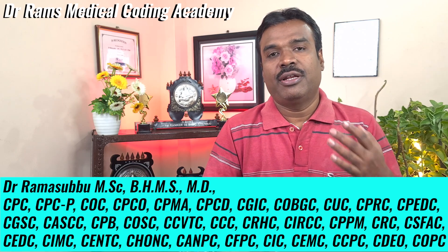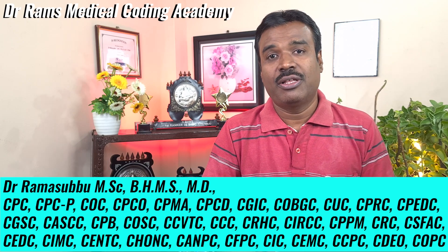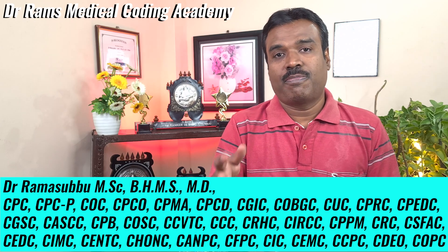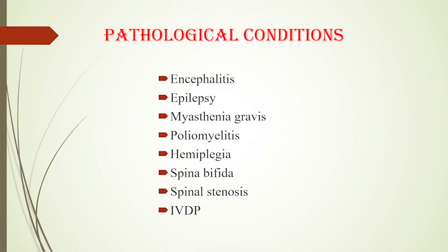Moving to pathological conditions: encephalitis is inflammation of the brain (encephalon = brain). Myelitis is inflammation of the spinal cord (myelo = spinal cord). Note: myelo can also mean bone marrow — as in osteomyelitis, which is inflammation of bone and bone marrow. In poliomyelitis, polio refers to the gray matter of the spinal cord — so poliomyelitis is inflammation of the gray matter of the spinal cord. Epilepsy is a neurological disorder involving convulsions or seizures.